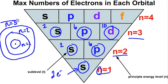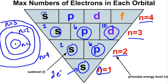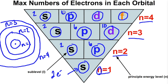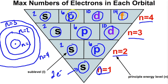The fourth energy level contains four sublevels: s, p, d, and f. The s sublevel holds a maximum of two electrons, the p holds six, the d holds ten, and the f sublevel has seven orbitals each holding two, giving fourteen electrons. Two plus six plus ten plus fourteen adds up to thirty-two electrons, so the fourth energy level can hold a maximum of thirty-two electrons. The fifth energy level also contains s, p, d, and f sublevels, so it likewise holds a maximum of thirty-two electrons.